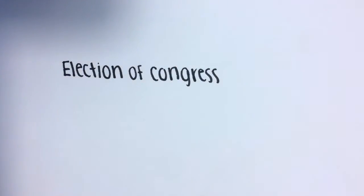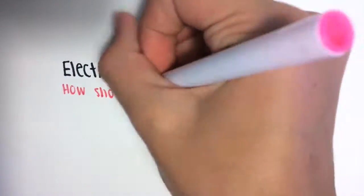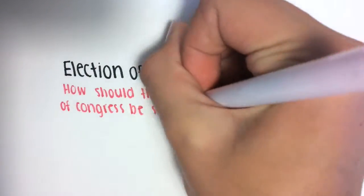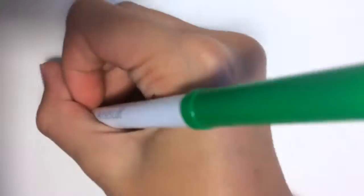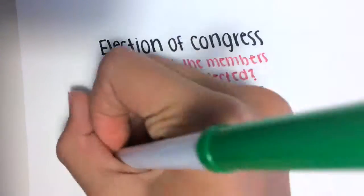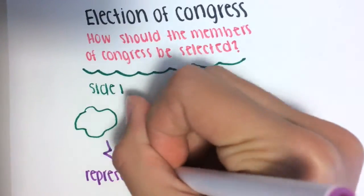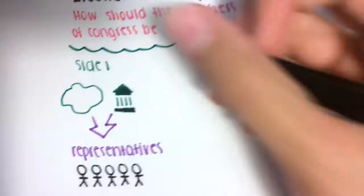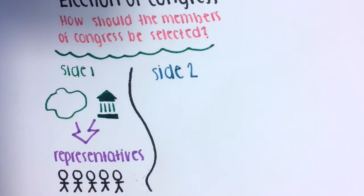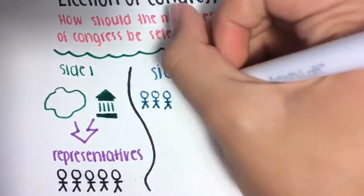The third issue was election of Congress. How should the members of Congress be selected? Side 1 wanted the state government to elect the representatives, and Side 2 said that the people should elect the members of Congress, because the members represent the people. The results came to be that the Senate is chosen by the legislative, and the House of Representatives are chosen by the people.